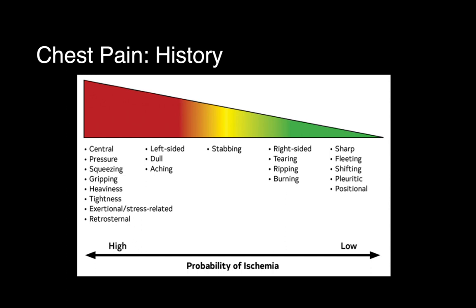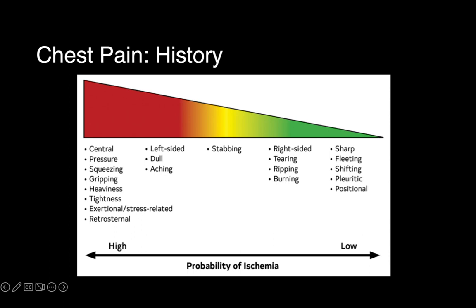First, talking about patient history: this can be really important in how you categorize chest pain. Looking at the diagram, people with higher probability of having coronary-related chest pain are those experiencing not just chest pain but also neck, jaw, arm, back, or shoulder discomfort — with a pressure, squeezing, gripping, or heavy sensation. That increases your pre-test probability. On the other side, sharp or pleuritic pain — meaning worse with inspiration — or positional chest pain significantly decreases your pre-test probability.